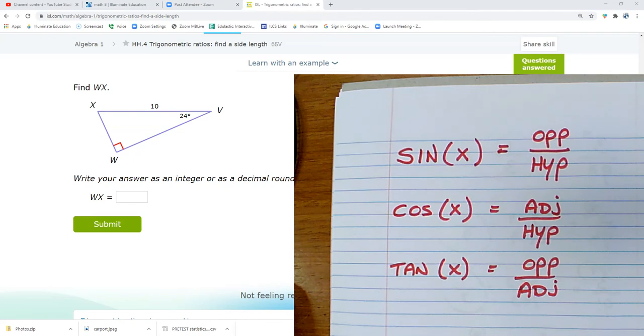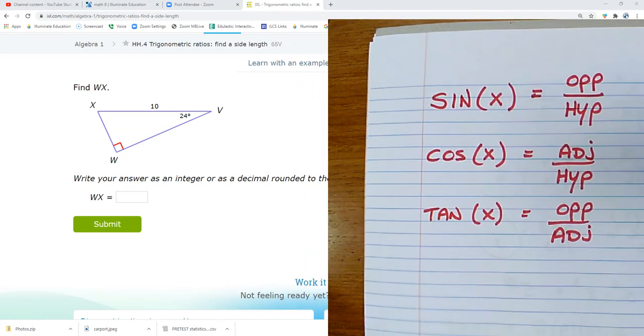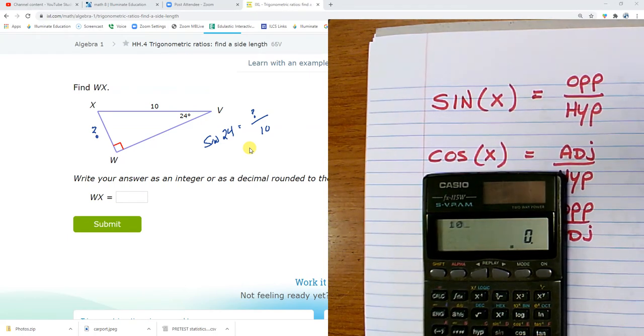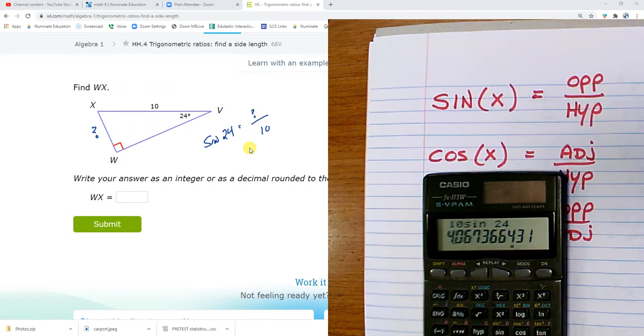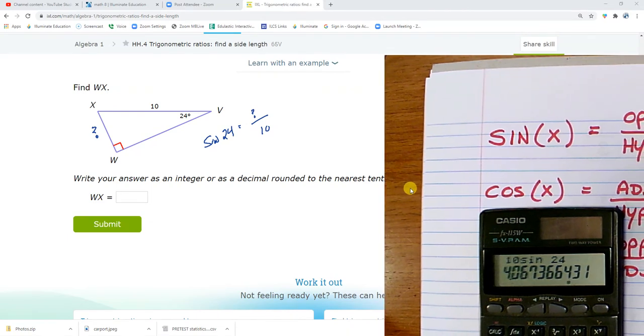So when I'm looking at this problem right here, what do I have? I'm looking for WX. I'm looking for this. So I'm looking for the opposite side. So I'm going to use the one that has the opposite, and I have the hypotenuse. So I'm going to use the sine function. So sine of 24 equals the opposite side, which is the unknown that I'm looking for, over the hypotenuse, which is 10. So what I'm going to do is I'm going to multiply both sides by 10. So it's rounding to the tenth, 4.1.